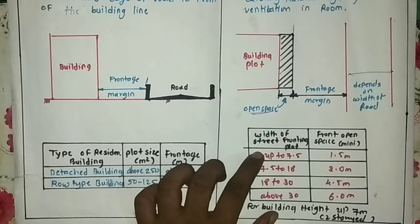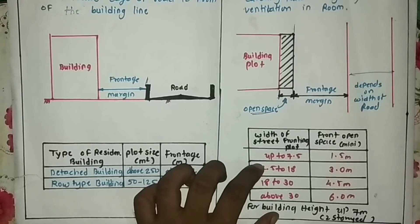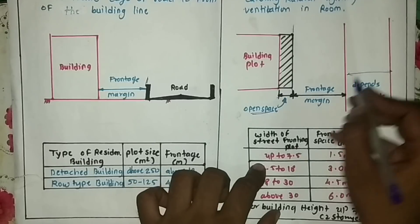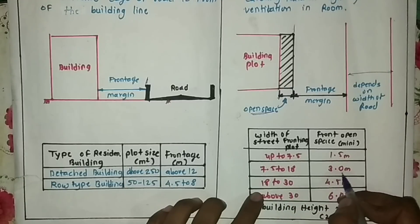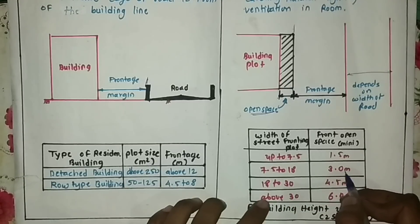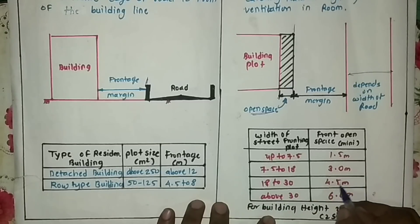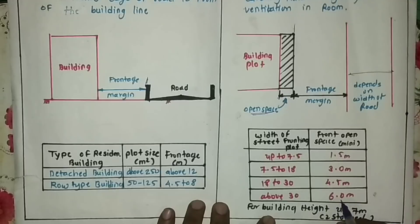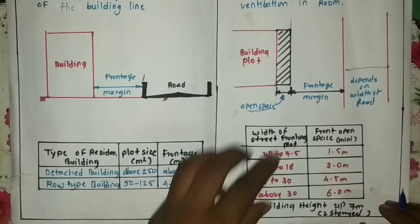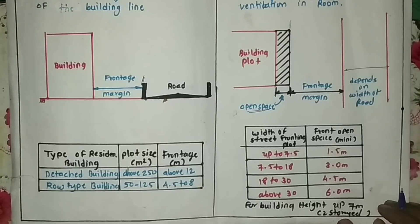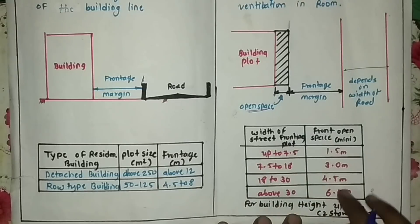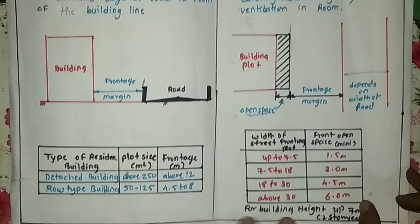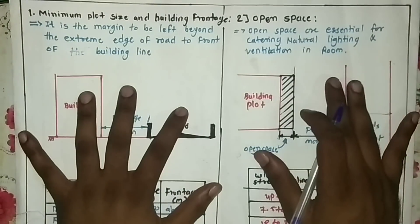For a road width up to 7.5 meters, your open space must be 1.5 meters. For road width 7.5 to 18 meters, open space must be 3 meters. For 18 to 30 meters road, open space will be 4.5 meters. Above 30 meters road, your open space will be 6 meters. Note that this data applies only for building height up to 7 meters — a two-story building.